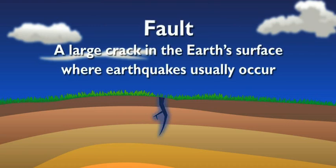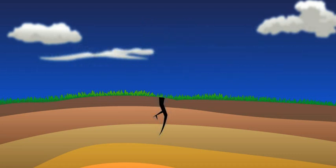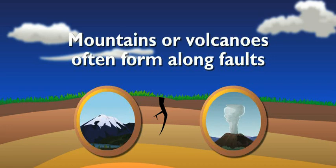Faults? Yeah. A fault is a large crack in the earth's surface, where earthquakes usually happen. There are tons of faults in California. That's why they have a lot of earthquakes. Depending upon the movement of the plates along the fault, mountains or volcanoes can form there.